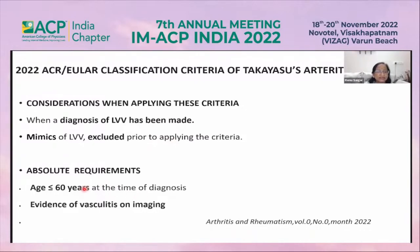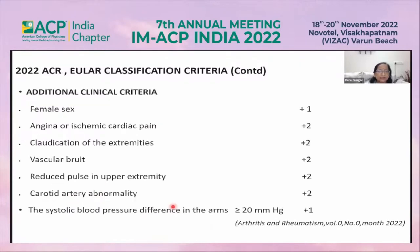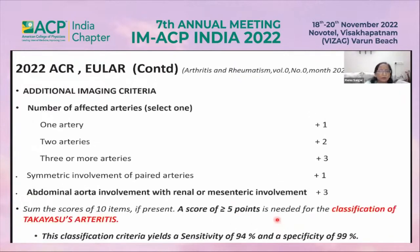This age cut-off was earlier 40 years, now it is 60 years. There must be evidence of vasculitis on imaging. Additional clinical criteria include: female sex, angina or ischemic cardiac pain, claudication of extremities, vascular bruit, reduced pulse in upper extremities, carotid artery abnormality in the form of carotidynia, and systolic blood pressure difference between arms of more than 20 mmHg.